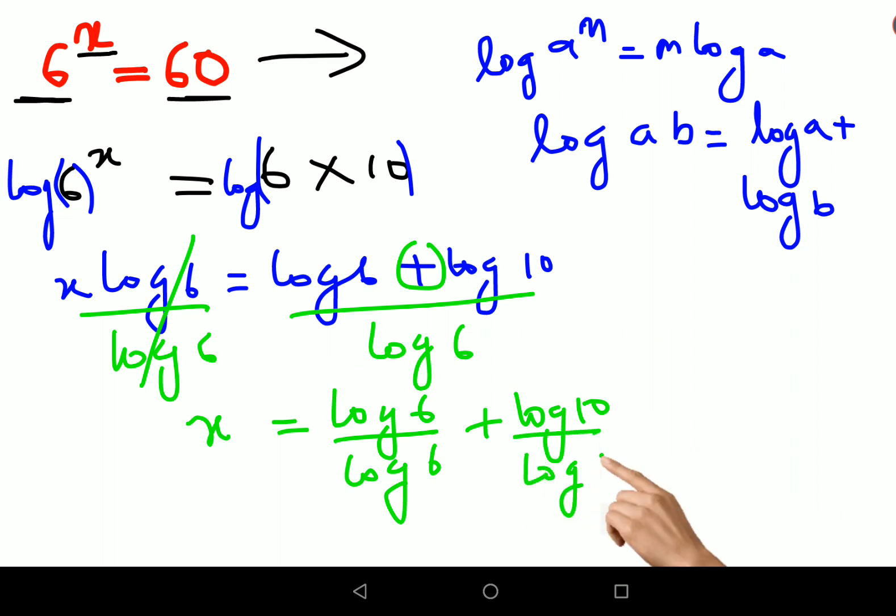And then you have log 10 upon log 6. So this is cancelling. Therefore I can say x value is nothing but 1 plus...